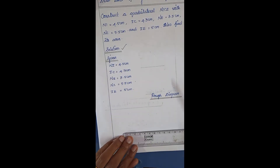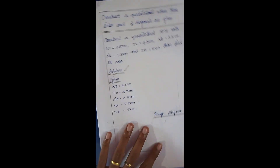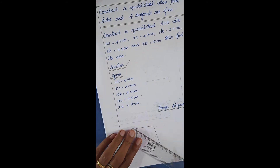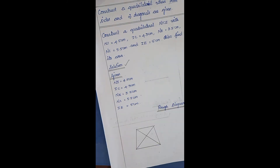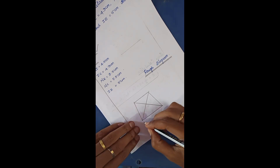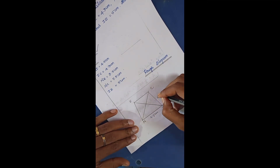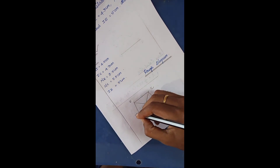Now we are coming to the rough diagram. The rough diagram looks like the fair diagram. We draw NICE and write all the values: NI = 4.5 cm, IC = 4.3 cm, diagonal NC = 5.5 cm, diagonal IE = 5 cm, and NE = 3.5 cm. That is the way we draw the rough diagram.